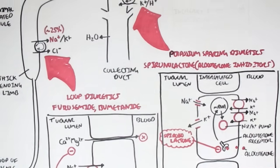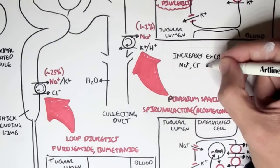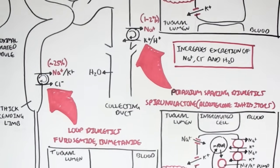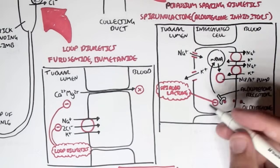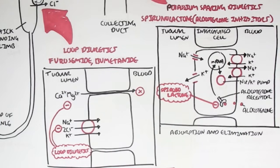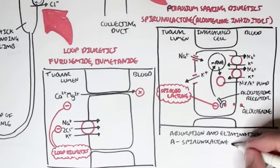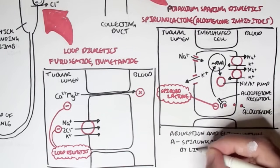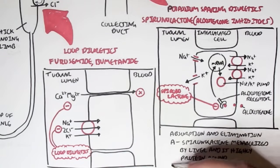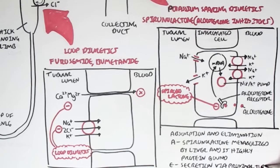Overall, potassium-sparing diuretics increase the excretion of sodium, chloride, and water, and therefore decrease blood pressure. For absorption and elimination: spironolactone is metabolized by the liver and is highly protein-bound, meaning it travels in the blood by binding to a protein. It is eliminated via secretion through the proximal convoluted tubules.